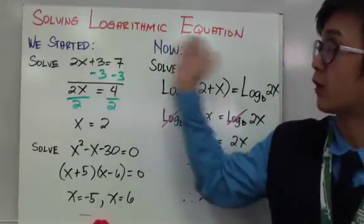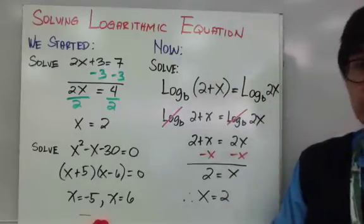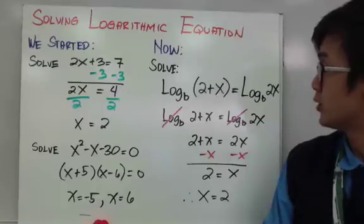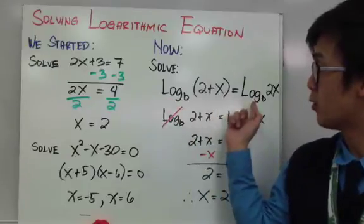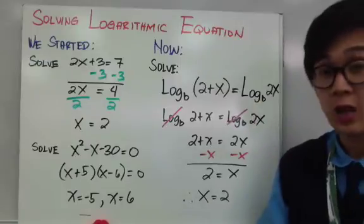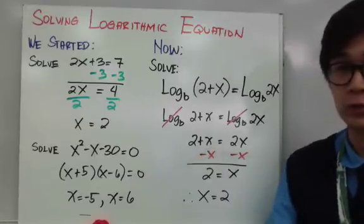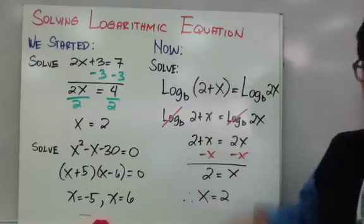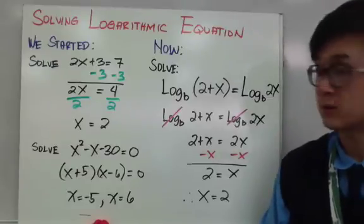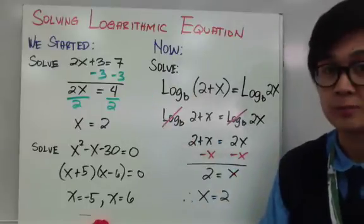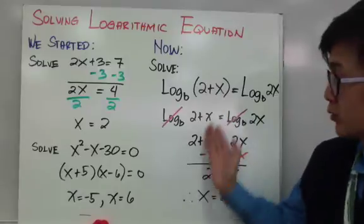We're going to be working on logarithmic equations. In our first example, we have logarithm of 2 plus x base b equal to logarithm of 2x base b. The rule is simple: if you have the same logarithm on both sides of the equation with the same base, you cancel the logarithm using the property, and you end up with 2 plus x equal to 2x. This is just a linear equation — subtract x on both sides and we get 2 equals x. When you have logarithm on both sides with the same base, you can cancel the logarithm and proceed to solve your equation.